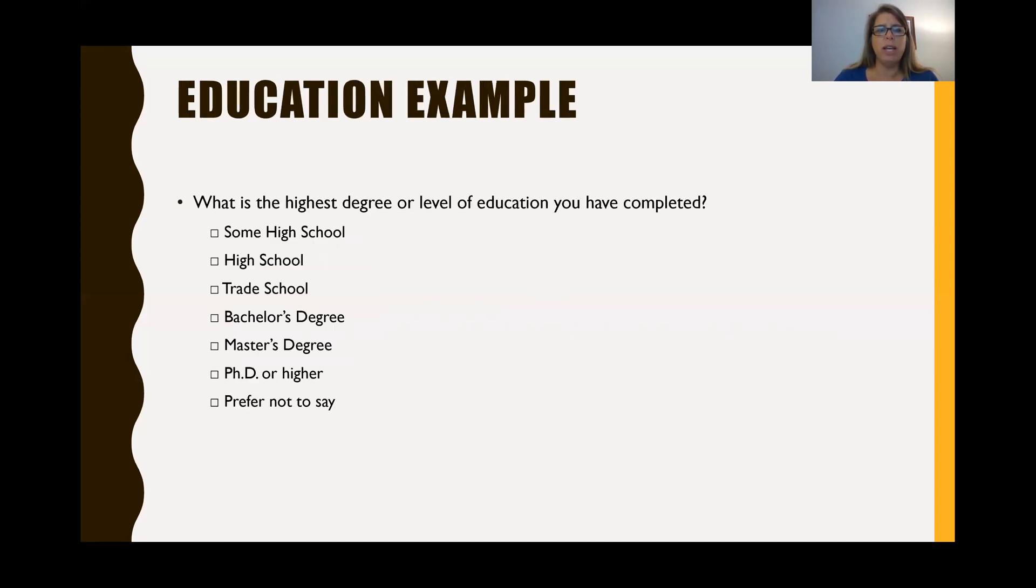So while there are some standards for using income and where the income break should be, it should really always be driven by your research question and what data you want to acquire. Okay. So education is another ordinal variable because one level of education is higher or more than a lower level. So what is the highest degree or level of education you have completed?